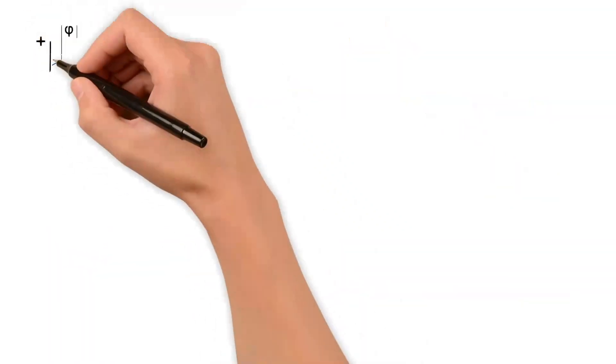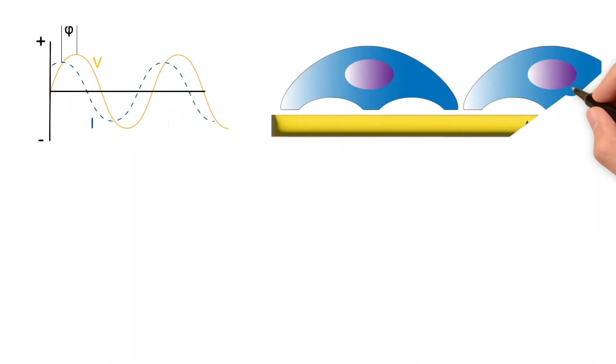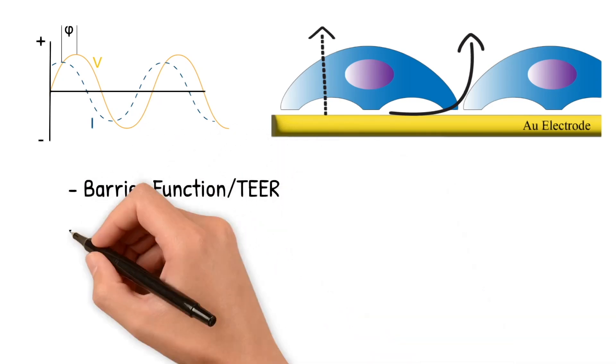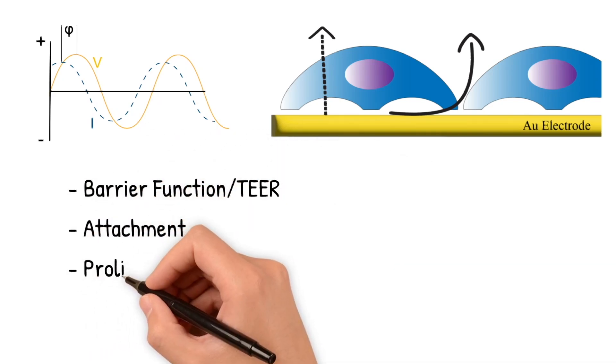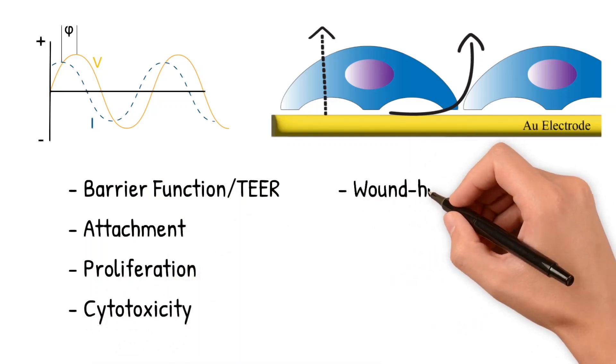By taking advantage of properties of alternating currents and the pathways in the cell layers that cause impedance, ECIS can measure a multitude of cell behaviors, including barrier function TEER, as previously mentioned, attachment, proliferation rates, cytotoxicity for EC50 values,